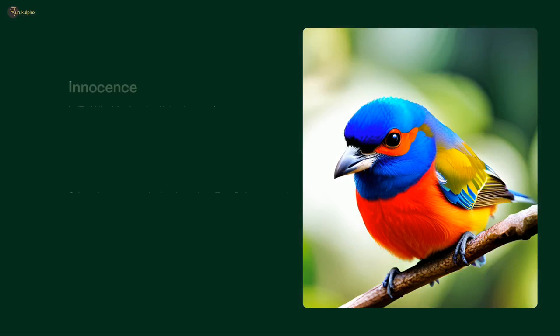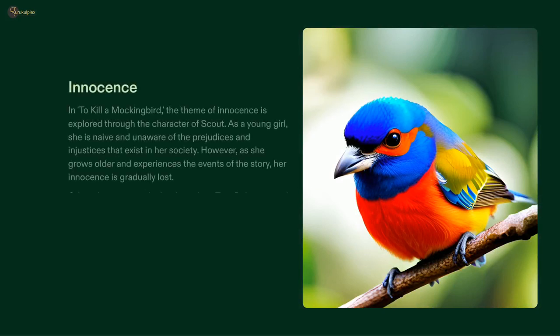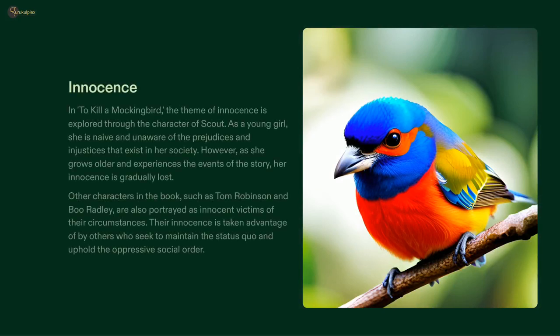Lee's classic novel To Kill a Mockingbird explores the theme of innocence through the character of Scout. Initially, her naivety shields her from the injustices she's surrounded by, yet she eventually grows to understand that her innocence can be used to the advantage of those who wish to uphold the oppressive status quo. This is also true of characters like Tom Robinson and Boo Radley, whose innocence is taken advantage of by those who wish to keep inequality in place. Ultimately, To Kill a Mockingbird serves as a potent reminder of the power of innocence and its implications.